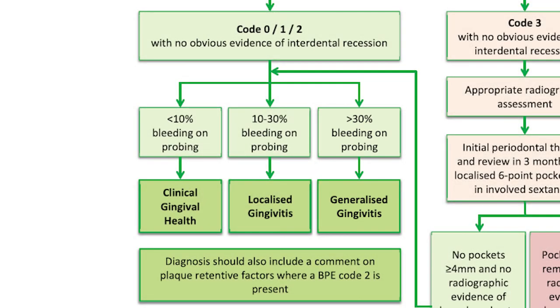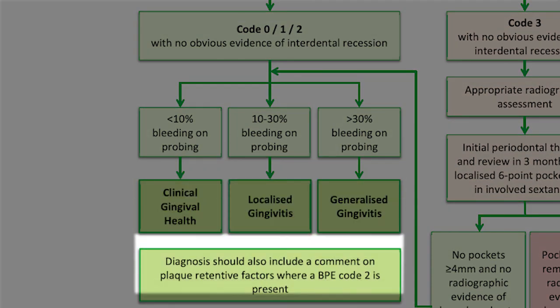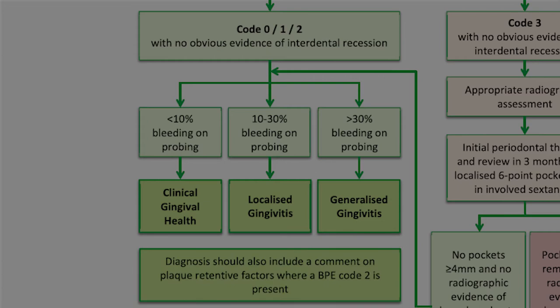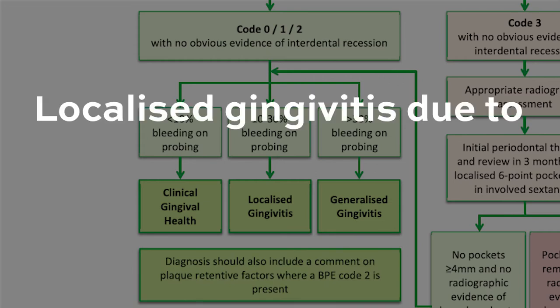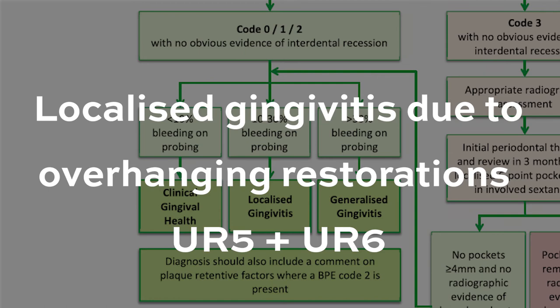Now if they also scored a code two anywhere, you would supplement the gingival diagnosis with any plaque-retentive factors or calculus which might have led to that score of two. For example: localized gingivitis due to overhanging restorations on upper right five and upper right six.